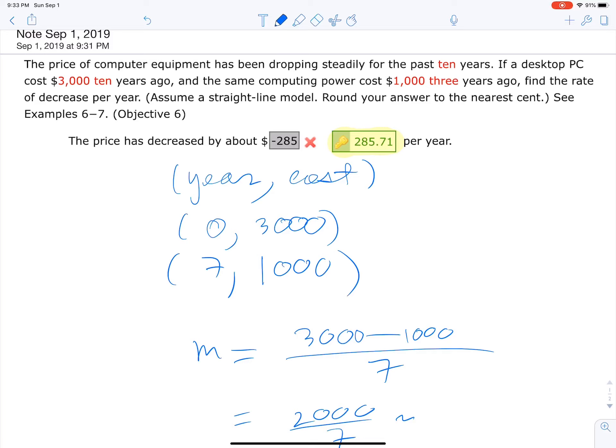In this case, it's saying a rate. Rate is the same thing as a slope - rate of decrease. So it's negative. This person put negative 285, but you don't need to put the negative sign in this case since they're saying it's the rate of decrease.